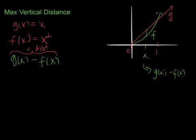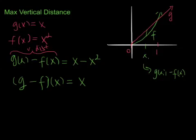So if I were to plug in, say, 0.5 here, this would give me the vertical distance when x is 0.5. And I can define this function. g of x is x and f of x is x squared. So I have x minus x squared. This is the composite function g minus f of x, which equals x minus x squared.